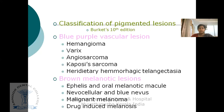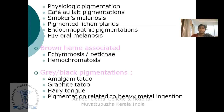Brown melanotic lesions include ephelis and oral melanotic macule, nevocellular and blue nevus, malignant melanoma, drug-induced melanosis, physiologic pigmentation, Peutz-Jeghers syndrome, smoker's melanosis, pigmented lichen planus, endocrinopathic pigmentation, and HIV oral melanosis.